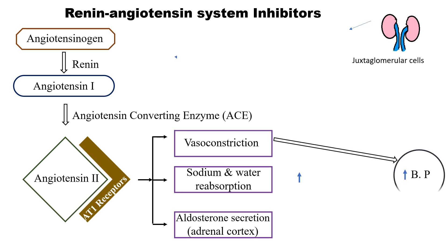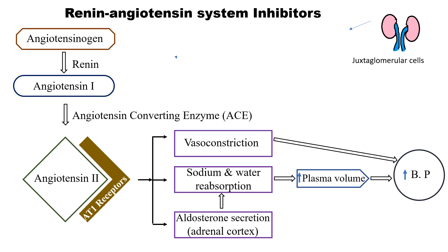Increased vasoconstriction leads to increased blood pressure. Increased sodium and water reabsorption leads to increased plasma volume, which in turn increases blood pressure. Increased secretion of aldosterone from the adrenal cortex further increases the reabsorption of sodium and water, which increases plasma volume and overall blood pressure. Now let us understand the anti-hypertensive mechanism of the subcategories of renin-angiotensin system inhibitors.